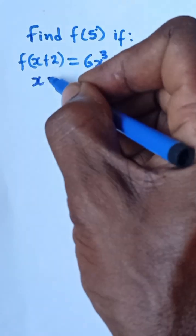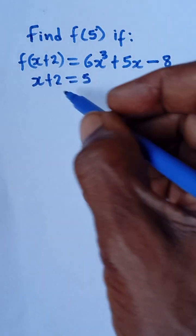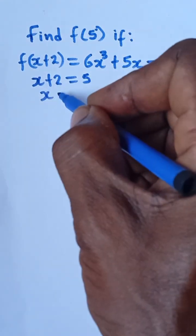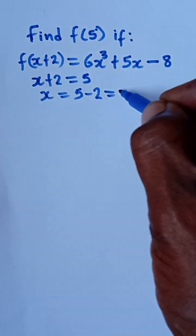First of all, I'm going to say x plus 2 is equal to 5. And that will give me x is equal to 5 minus 2, which is equal to 3.